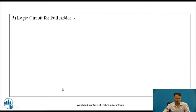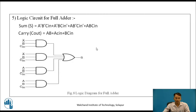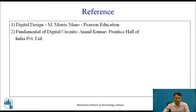Now let us design the logic circuit from these two equations for sum and carry-out. For sum, as there are 4 terms, we require 4 AND gates, and the outputs of the 4 AND gates are given to an OR gate which gives us sum as output. For carry-out, the equation is AB + AC-in + BC-in, so we require 3 AND gates, and the output of those 3 AND gates is given to an OR gate, which gives us C-out. These are the references. Thank you.